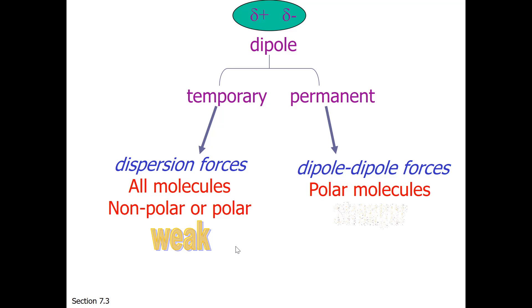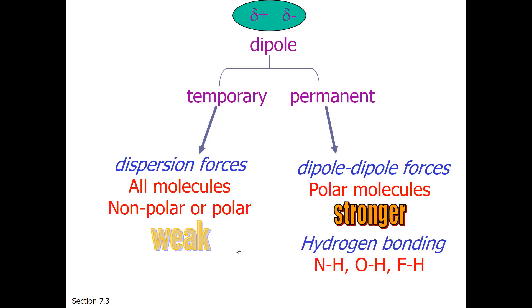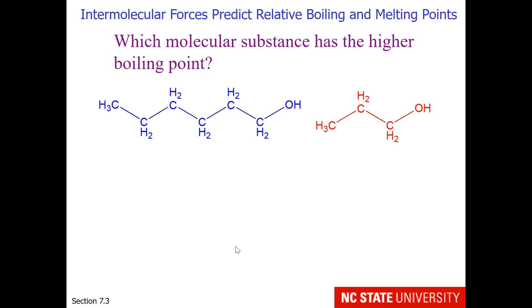Permanent dipole forces belong to polar molecules and are stronger than dispersion forces. And finally, hydrogen bonding, which is a particularly strong type of dipole force. This is the strongest interaction for molecules. Remember, molecules are made of nonmetals. One can use intermolecular forces to predict relative boiling and melting points.